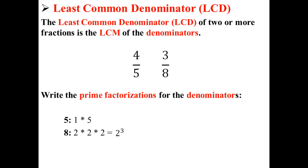Let's write the prime factorizations for the denominators. The prime factorization for 5 is simply 1 times 5, and the prime factorization for 8 is 2 times 2 times 2, or 2 to the third.